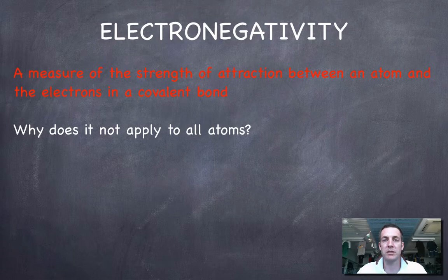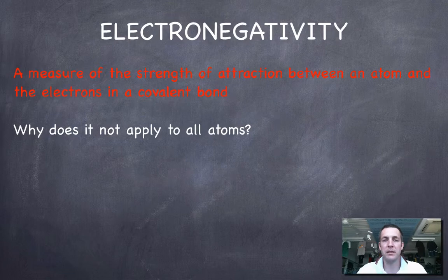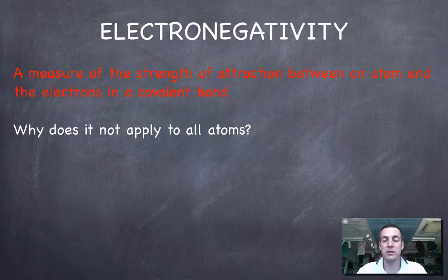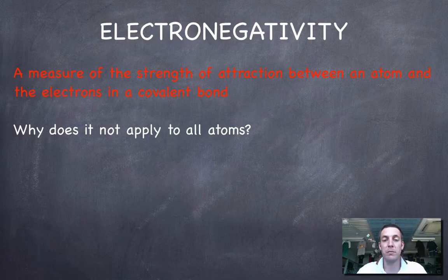Let's have a quick look at what we mean by electronegativity. This is a kind of relative scale which we'll look at a bit more later. It's important to know the definition: it is a measure of the strength of attraction between an atom and the electrons in a covalent bond. It's important that you can find atoms that make covalent bonds to measure how strongly they attract electrons. Some atoms don't have electronegativities because they've never been found in covalent bonds — in particular, the noble gases because they very rarely form compounds at all.